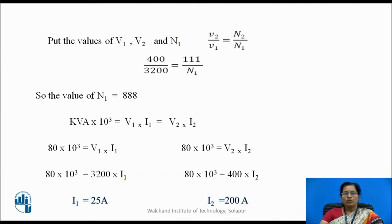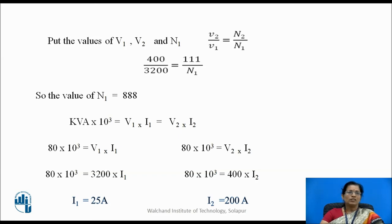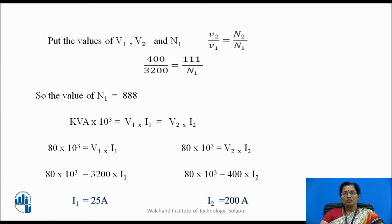Using kVA × 10³ = V1·I1 = V2·I2, we calculate I1 = 25 ampere. Using kVA × 10³ = V2·I2, substituting V2 = 400 V: 80 × 10³ = 400 × I2, giving I2 = 200 ampere.